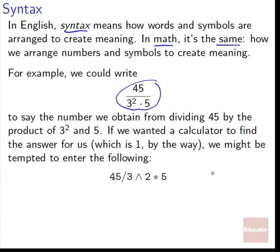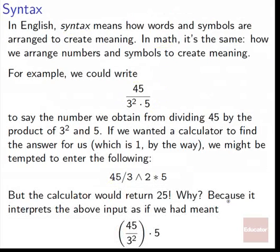If we wanted a calculator to find the answer for us — which happens to be 1, by the way — we might be tempted to enter it in a straightforward way as our syntax. However, if we did that, we'd actually get 25, which is completely wrong. Why? Because the calculator interprets that input as if we had meant 45 divided by 3, then squared, times 5.